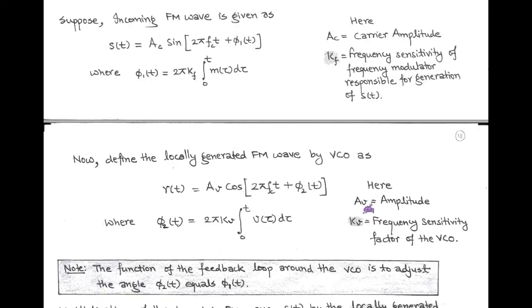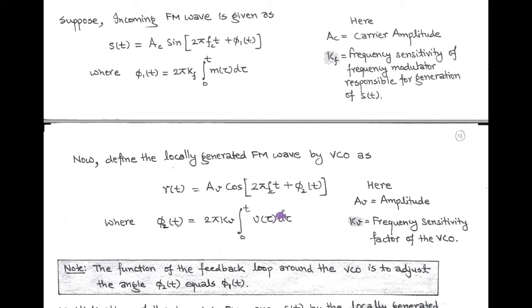The voltage controlled oscillator generates its own FM wave, the locally generated FM, denoted by RT, which equals A_V·cos(2π·fc·t + φ2(t)), where φ2(t) equals 2π·kV·∫V(τ)dτ. Here, V(τ) is the control voltage, A_V is the amplitude, and kV is the amplitude sensitivity factor of the voltage controlled oscillator.